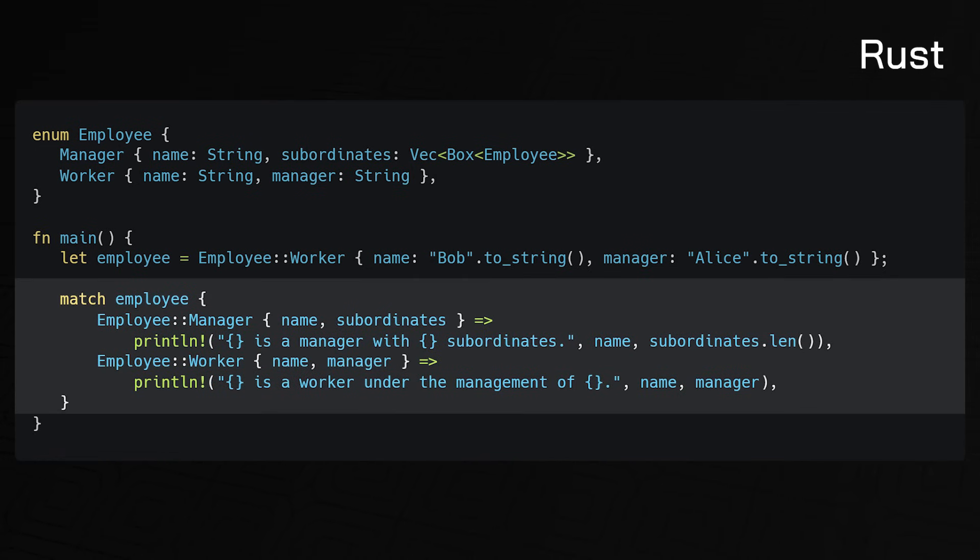Rust also supports dynamic dispatch with trait objects, allowing different types that implement the same trait to be treated as interchangeable — for example, storing a rectangle and circle together in a vector of shape trait objects. The trait system has several advantages over classical inheritance: it allows flexible code design, multiple types can independently implement the same trait, traits are non-invasive, they avoid the fragile base class problem, and Rust's trait system uses static dispatch by default for efficient code generation.